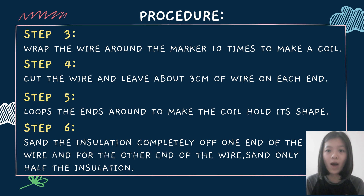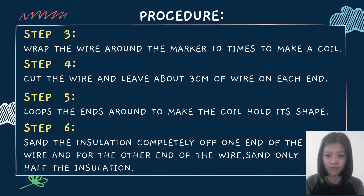Now, wrap the wire around the marker 10 times to make a coil. Next, cut the wire and leave about 3 cm of wire on each end. Loop the ends around to make the coil hold its shape.